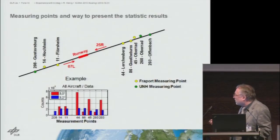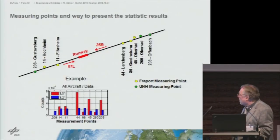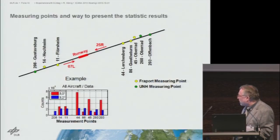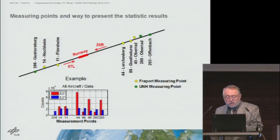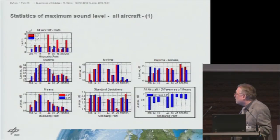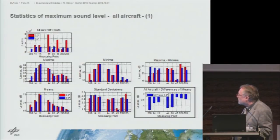The measurement points are not always directly below the flight path — 3 on the left-hand side and 5 on the right. The findings are structured accordingly. The number of approaches assessed at measurement point 208 and point 203 are shown here. The aircraft is approaching either from the left or right; the distances shown are not to scale.